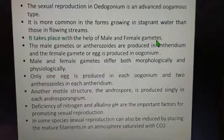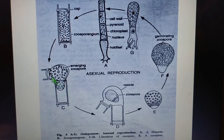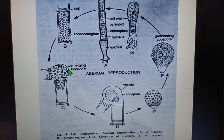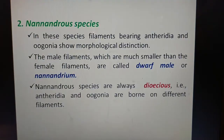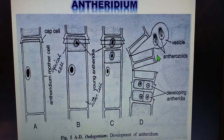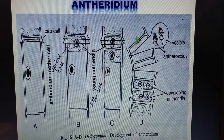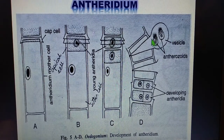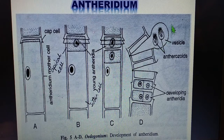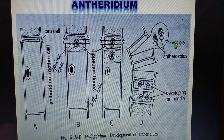Like zoospores, antherozoids are liberated by the transverse splitting of the wall of the antheridium, similar to how zoospores are released from the zoosporangium. The antherozoids are enclosed within a hyaline vesicle at the time of liberation, just as the zoospores are enclosed in a vesicle when released.